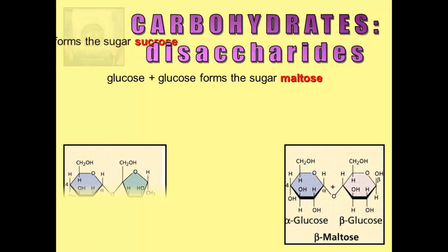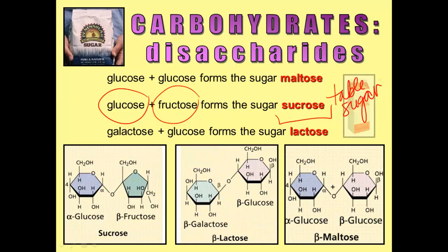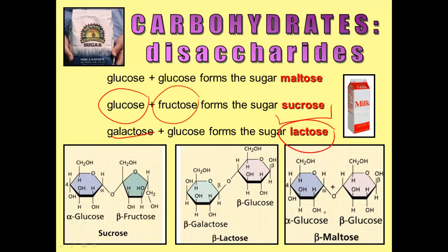Other disaccharides: if you put glucose together with fructose, you get sucrose — table sugar. If you put galactose together with glucose, you'll make lactose, and that is the sugar found in milk. You can see their structural formulas here — here's sucrose, lactose, and maltose. They all look very, very similar to each other.